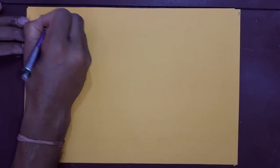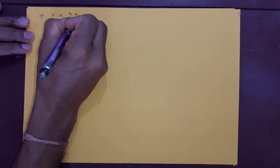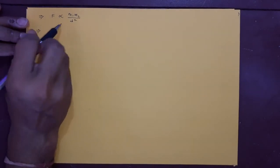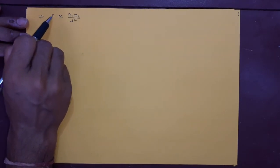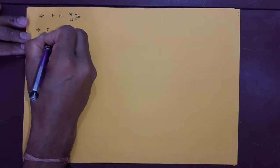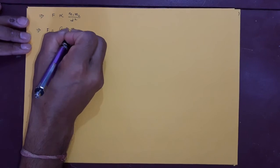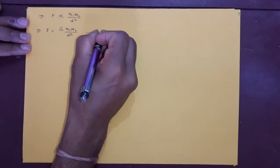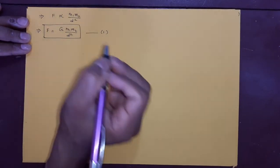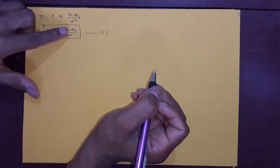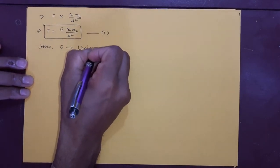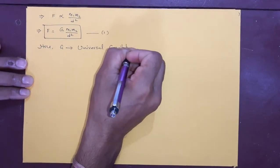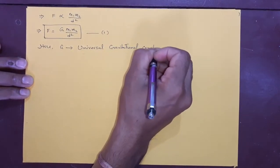Combining the two proportionalities, F is directly proportional to m₁m₂ divided by d². Proportional means it depends — if m₁m₂ is more, force is more; if d is more, force is less. Introducing the constant of proportionality G, the formula becomes F = Gm₁m₂ / d². This is Equation 1 — the formula for the Universal Law of Gravitation.